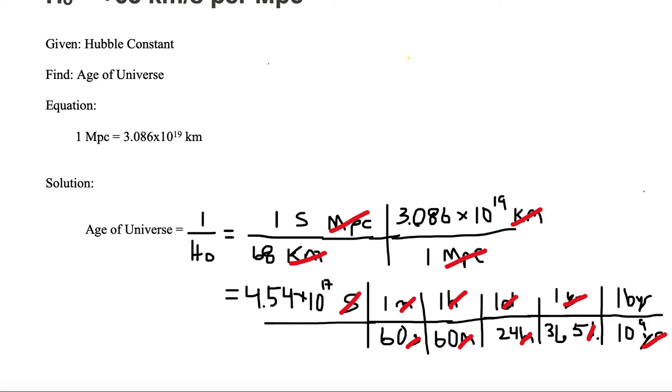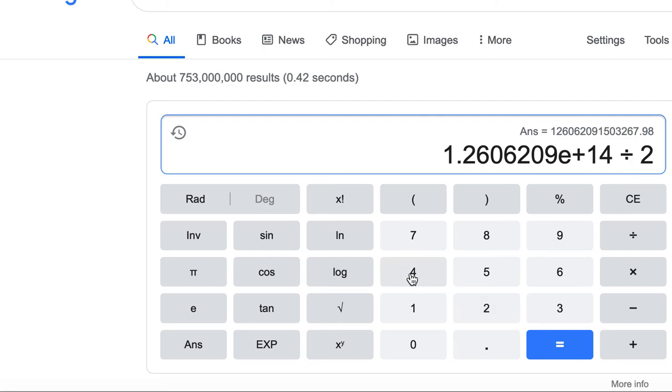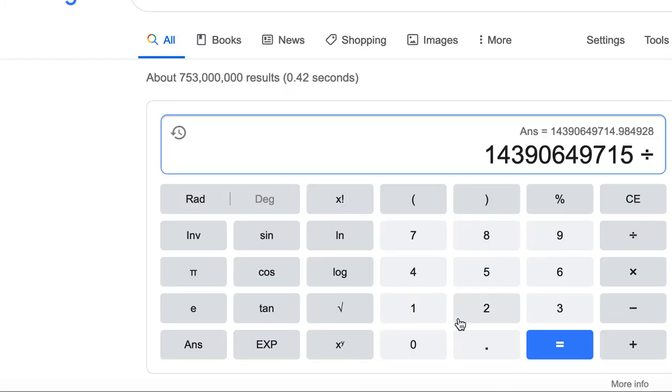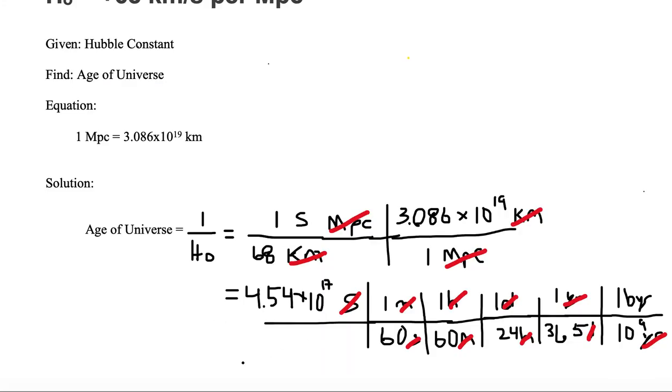Now we need to divide by 24 and divide by 365. So we divide by 24, and then we divide by 365. Now we need to divide by 10 to the 9th. So we divide by 1e9, and we get 14.4.